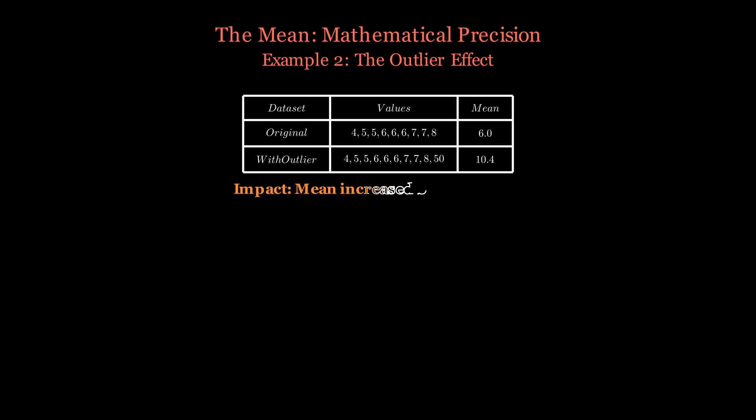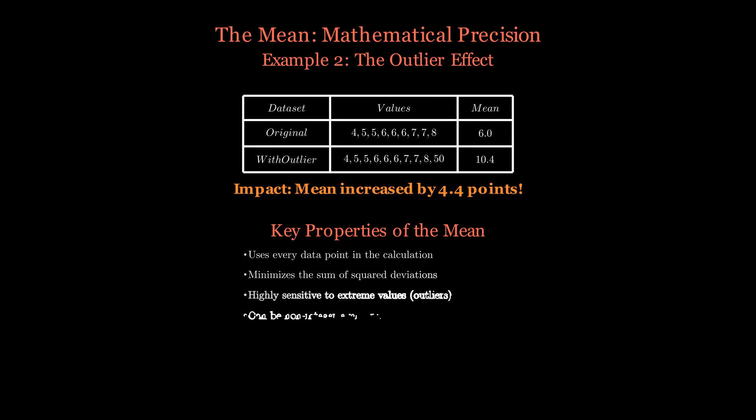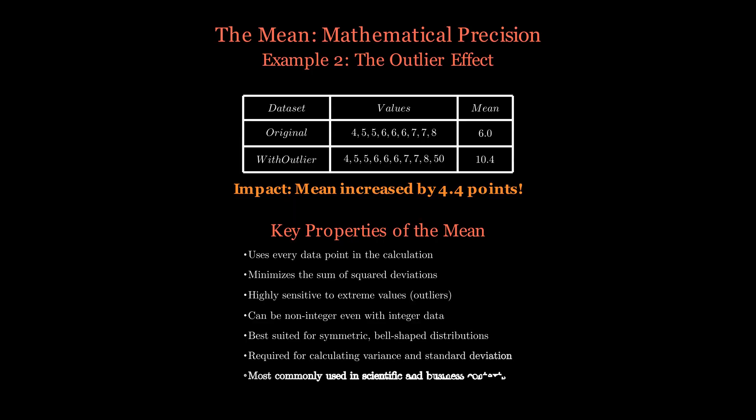This is why understanding your data's distribution is crucial before choosing the mean. The mean has several important mathematical properties that make it both powerful and sometimes problematic. It uses every single data point, making it mathematically comprehensive but sensitive to outliers. It minimizes the sum of squared deviations, which is why it's fundamental to calculating variance and standard deviation. The mean works best with symmetric, bell-shaped distributions where outliers are rare. It's the most commonly used measure in scientific research and business analytics because of its mathematical properties and ease of further calculations.